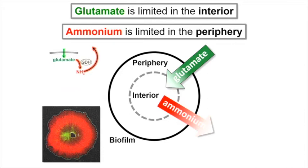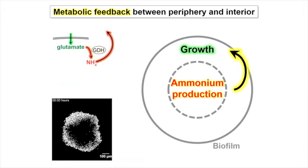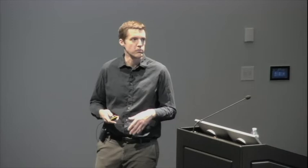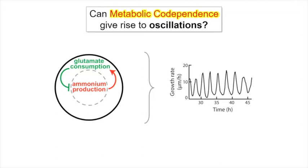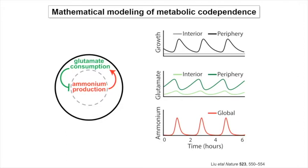Ammonium is shared throughout the community as a common good or growth factor. It allows growth of cells at the edge, but the more those cells grow at the edge, they cut off glutamate — the substrate for ammonium. So the center of the biofilm is sustaining growth of the community. Once there's too much growth, you cut off the substrate required to produce ammonium, and this negative feedback loop gives rise to oscillations where the growing layer at the edge periodically halts its growth. As predicted by the model, supplementing ammonium or glutamine to the media halts these oscillations.